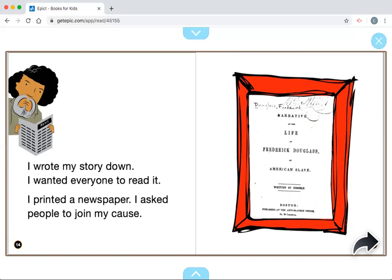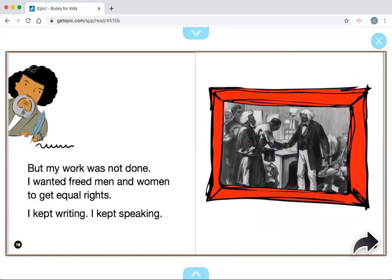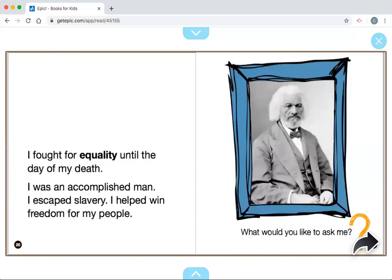So, he says, I wrote my own story down. I wanted everyone to read it. I printed a newspaper. I asked people to join my cause. So he was also an author as well. He wrote his own book about his own life. America went to war. The South fought the North. The North won. The slaves were freed. But my work was not done. I wanted freed men and women to get equal rights. I kept writing. I kept speaking. I fought for equality until the day of my death.